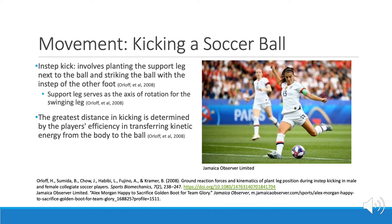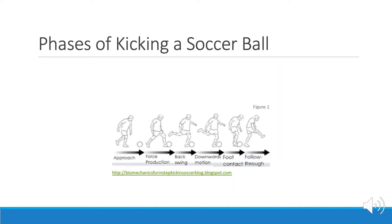This photo shows a soccer player planting her support leg next to the ball and getting ready to swing the dominant leg through to kick the ball. This image shows the different phases of kicking a soccer ball, beginning with the approach towards the ball, then generation of force to swing the leg backwards before the swing through to kick. As the leg swings towards the ball in the downward motion, angular velocity increases and is transferred to the ball at foot contact. Once the ball is kicked, the leg follows through the swing phase in order to slow down.